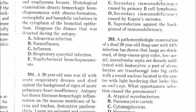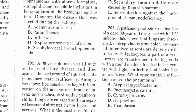Question 203: Pathomorphologic examination of a dead 30-year-old drug user with HIV infection showed lungs of a deep gray color, low aerial; interalveolar septa are densely infiltrated with leukocytes; a part of alveolar cells are transformed into big cells with a round nucleus located in the center with light bordering that looks like an owl's eye. Owl's eye appearance indicates cytomegalovirus. The answer is C.